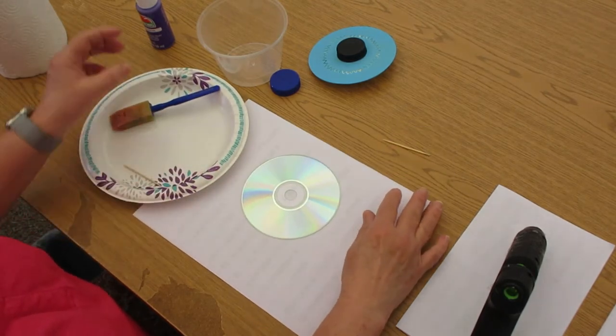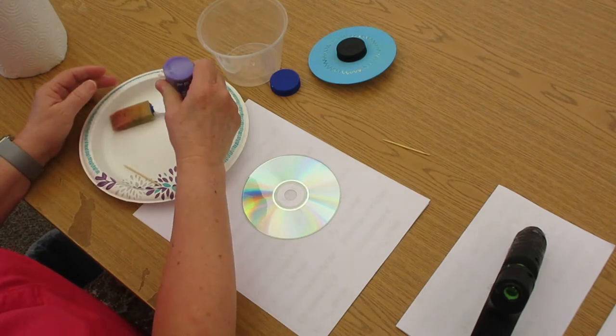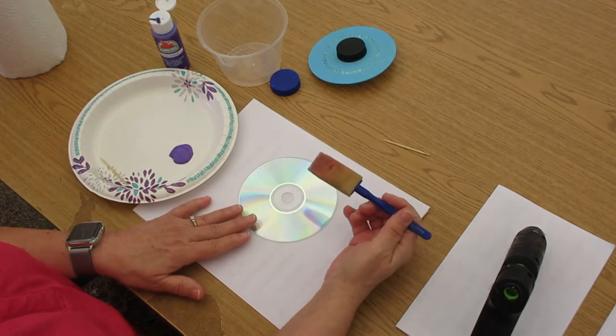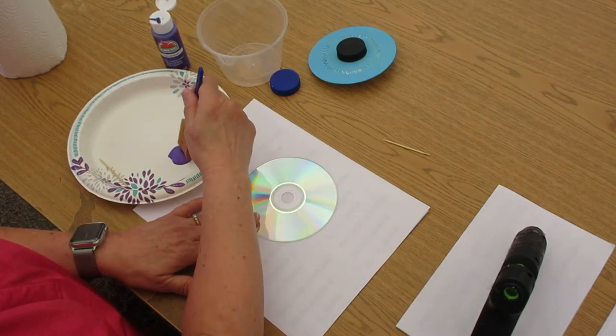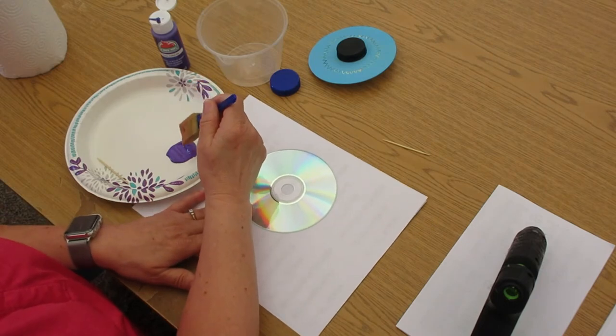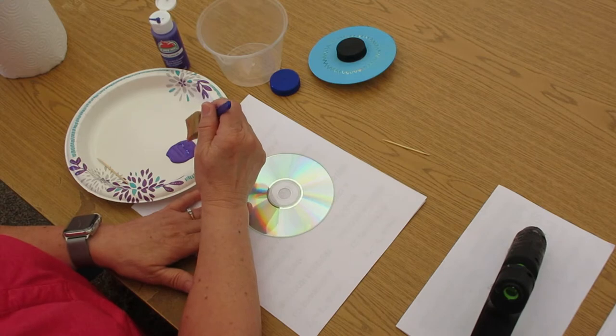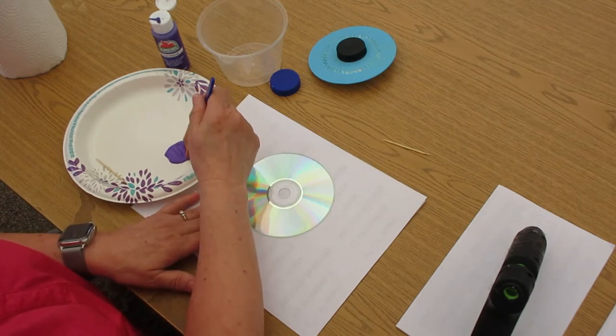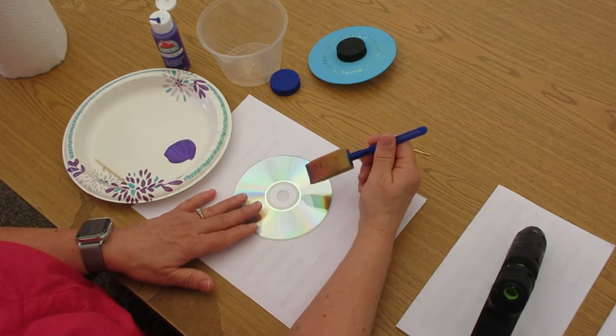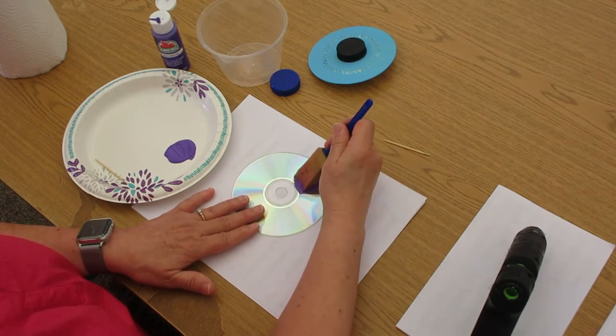So here I am, I'm going to take my paint, which I picked purple this time. Now you paint your CD whatever color you want to paint. And it's going to probably take about two coats because it takes a lot to cover the CD. After we paint it to dry it, if you want it to dry really quick, you can use a hairdryer. So now I'm going to paint my CD.